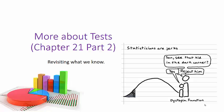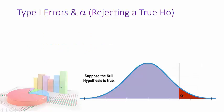Well here's a good cartoon. It says, Statisticians are jerks. Sonny, see that kid in the dark corner? Yes. Reject him. It's cold business statistics and we shall get on to the errors.